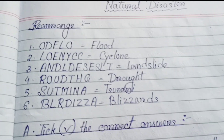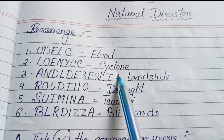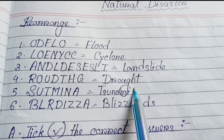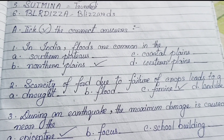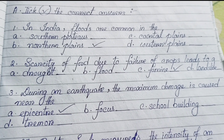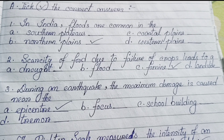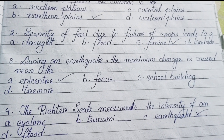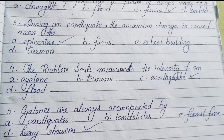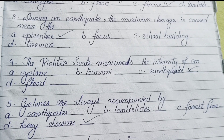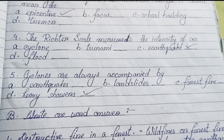First, we have some objective type question answers. Rearrange: flood, cyclone, landslide, drought, tsunami, blizzards. Tick the correct answer: In India, floods are common in — answer is (b) northern plains. Number two: scarcity of food due to failure of crops leads to — answer is (c) famine. Number three: during an earthquake, the maximum damage is caused near the — answer is (a) epicenter. Number four: the Richter scale measures the intensity of an — answer is (c) earthquake. Number five: cyclones are always accompanied by — answer is (d) heavy showers.